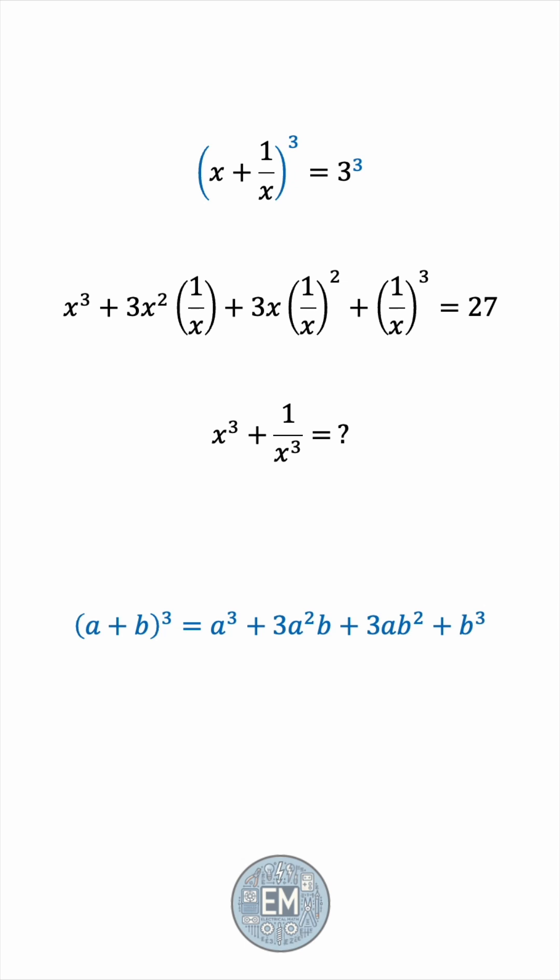The first product simplifies to 3x and the second product becomes 3 over x. Okay, let's distribute the cube for the 1 over x and we see that we have x cubed plus 1 over x cubed, the expression we're trying to find.